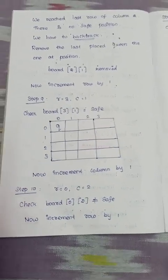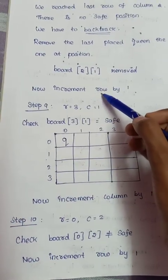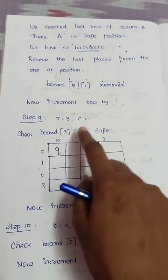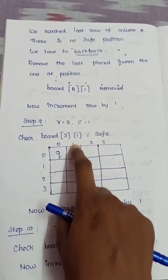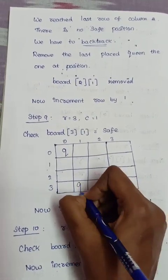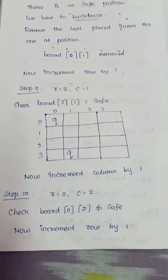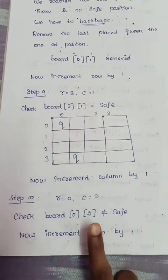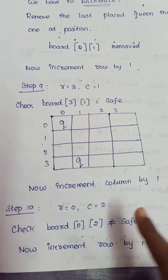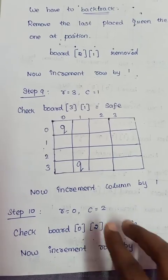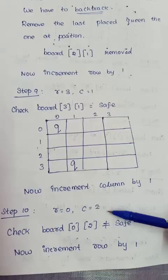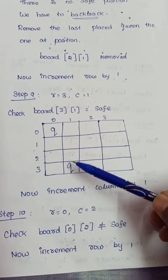After removing the queen, we increment the row to try the next position. Row becomes 3, column is 1. We check that position. If we exhaust all rows, we reset the row to 0 and increment the column.